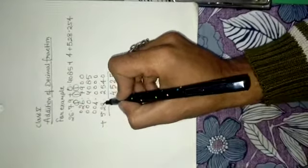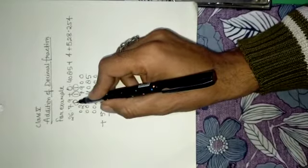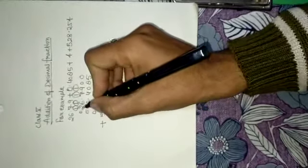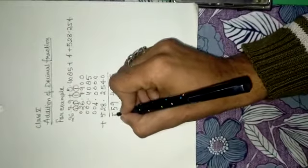Other side of decimal means 6 plus 4, 10 plus 18 plus 1, 19. Then carry will transfer 1 again, 2 to 4 plus 1, 5. Then, 5 at the last.